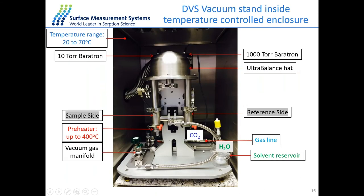The system can also run in static mode, similar to manometric systems, where we rely on the balance to continuously record changes in the weight of the sorbate. There are two sets of MFCs: one for pure water vapor with a solvent reservoir, and one for gases. This allows multi-component adsorption experiments by mixing water and CO₂ in different flow ratios, or by performing static water-CO₂ measurements where you first saturate the sample with water and then bring CO₂ on top.